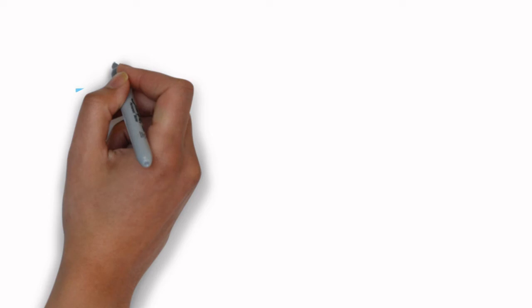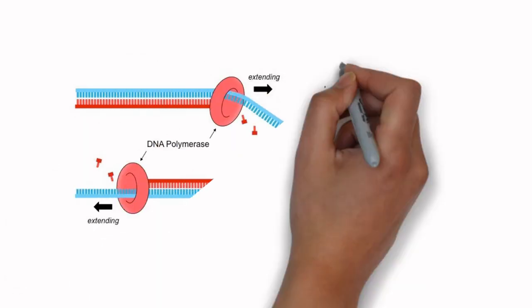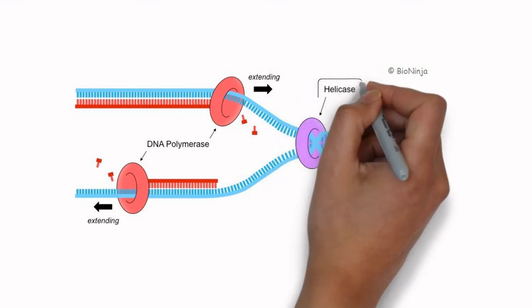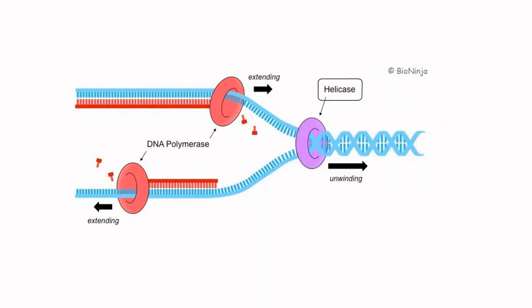In order for this to happen, two very important enzymes are involved. Helicase is the enzyme responsible for separating the two DNA strands, so that new strands can be formed.